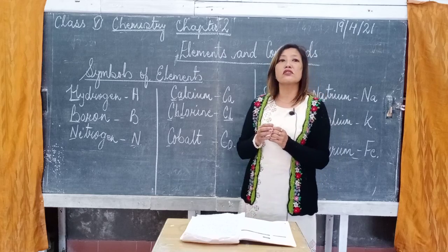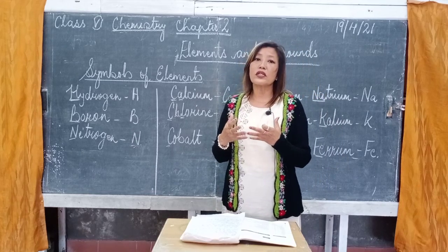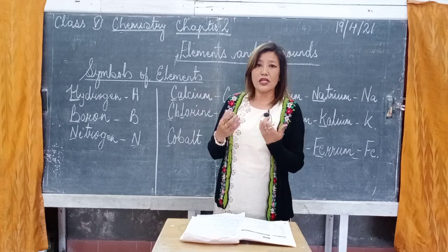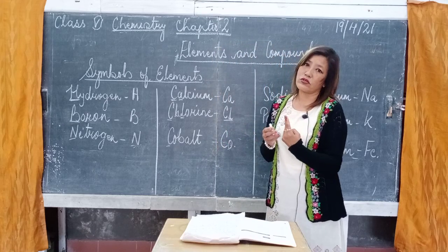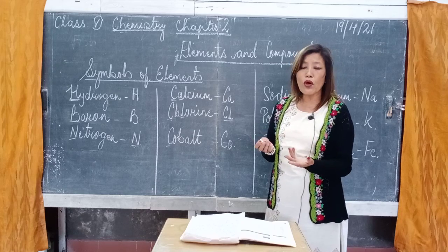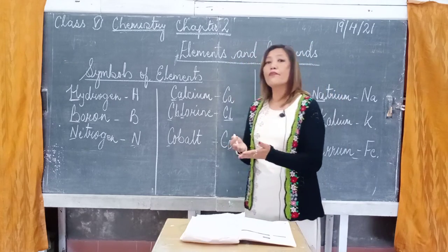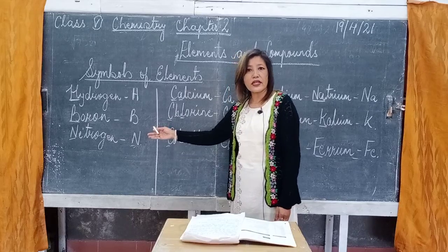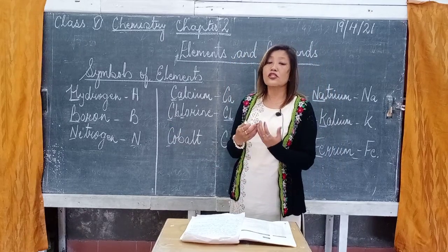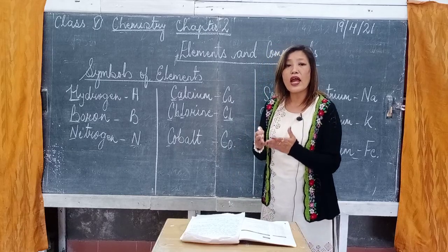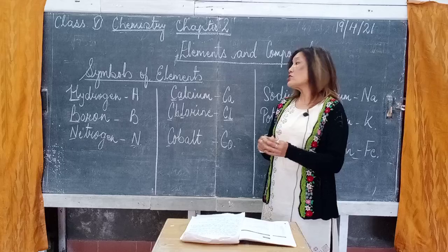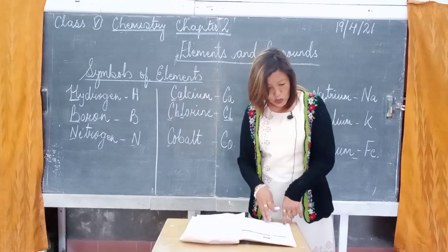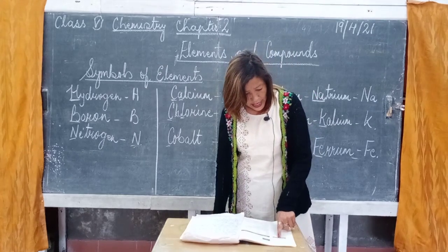Now let's look at the importance of symbols of elements. There are two main points. First, these symbols represent the names of elements — through the symbol we can identify the element. Second, symbols give us an idea of the number of atoms of an element. Children, on page 16 please go through table 2.4, which lists the names and symbols of elements.